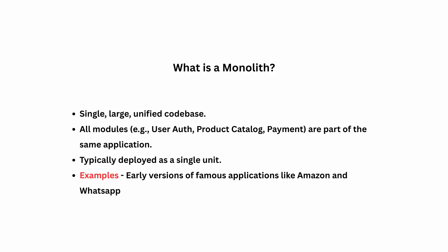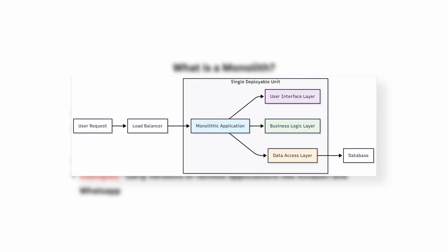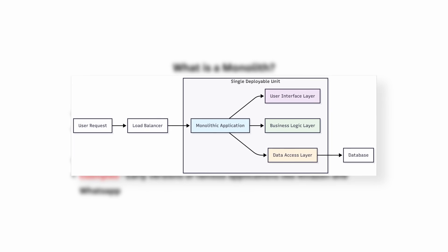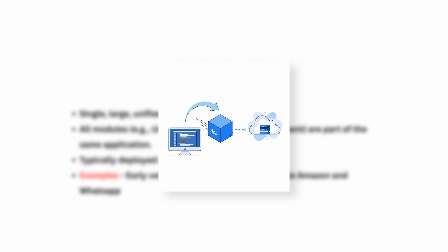First up, let's talk about monolithic architecture. Think of it as a traditional departmental store — you walk in and everything is under the same roof: clothes, electronics, home goods, food court. In software terms, a monolith is like a single large application where its different functions or modules — like user authentication, product listings, order processing — are all bundled together in one big code base. When you want to update the application, you have to deploy the entire unit.